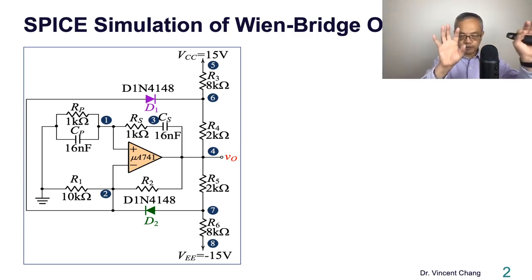The two RC networks serve as a frequency selective network. The non-linear amplitude control is composed of four resistors R3, R4, R5, R6 and the two semiconductor diodes.